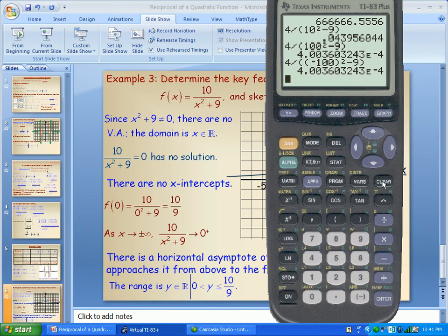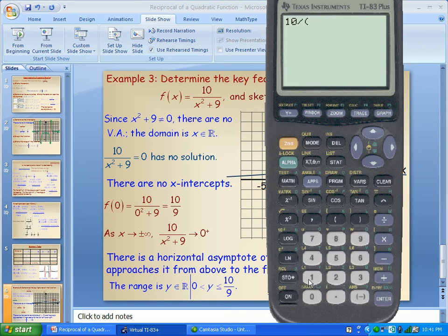If I type in 10 divided by, well let's say even 10 squared plus 9, that's not really that big an x value, but notice that the function value is getting close to zero. It's becoming a number quite close to zero.